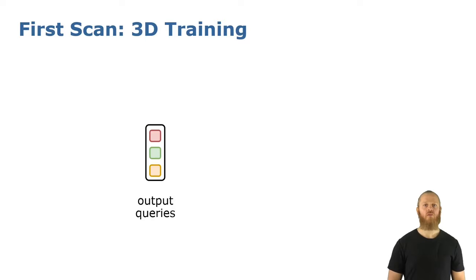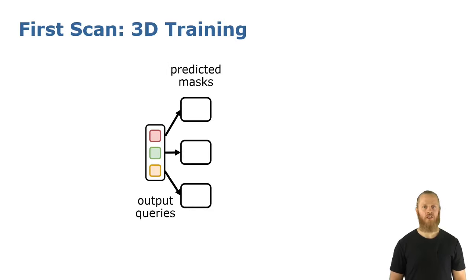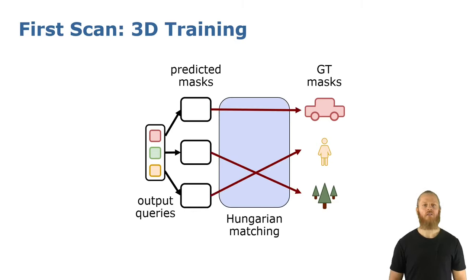To train our approach, we feed a sequence of scans. For the first scan, we are not tracking anything and therefore we perform the same supervision as in the 3D case. We will first obtain for each query a binary mask and a semantic class, and then to match them with the ground truth, to match each ground truth with the prediction, we use the Hungarian algorithm and once we have all the pairs, we compute the two loss functions to optimize the mask and the semantic class.